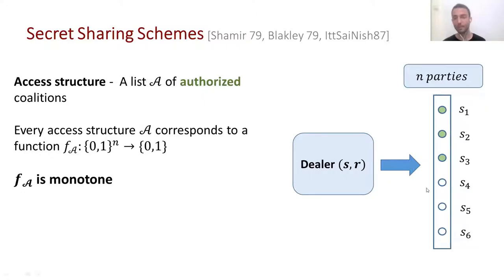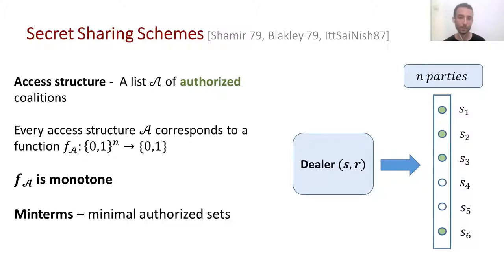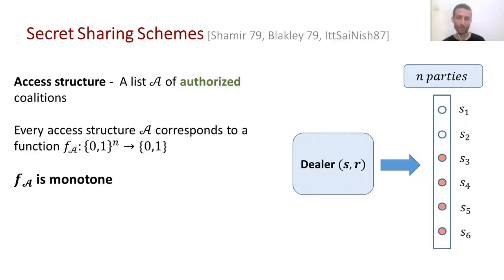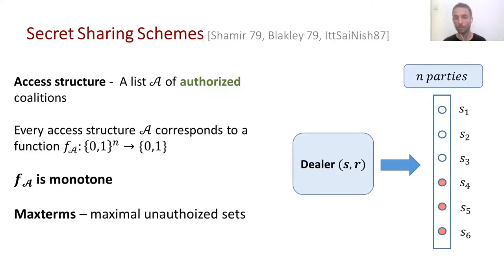We notice that these functions will always be monotone. If the set of parties one, two, and three is authorized, then if we add parties to it, it will remain authorized because it only has more information. In this sense, we think of every access structure as the list of all of its minimal authorized sets. Another side to monotonicity is that if a set is unauthorized, then all of its subsets are also unauthorized. So we think of an access structure as the list of all maximal unauthorized sets.